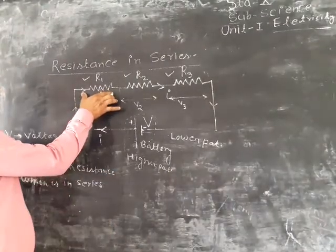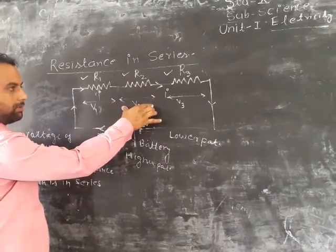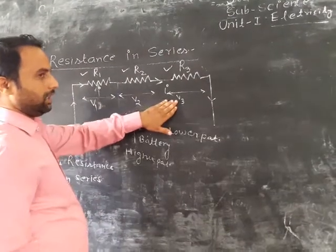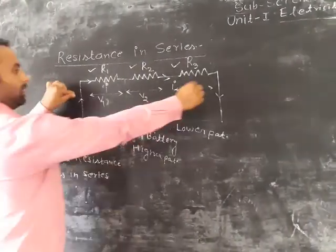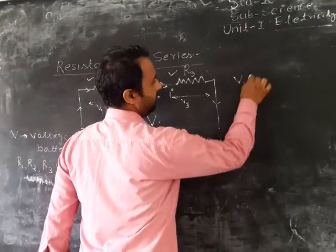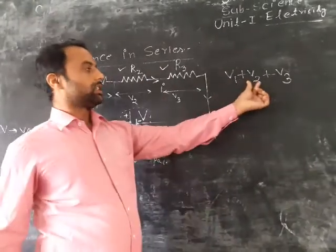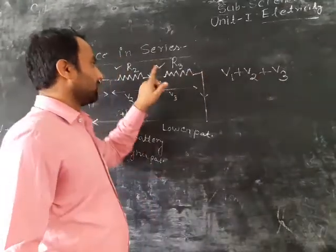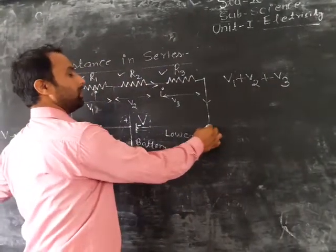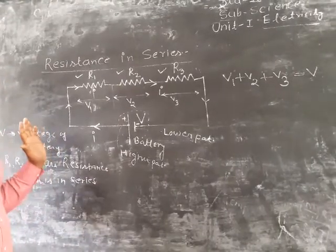Across resistance R1 the potential V1 is developed, across R2 the potential V2 is developed, and across R3 the potential V3 is developed. If we add V1, V2, and V3, this total value becomes V, because the connecting wire potential equals the battery potential. Hence, we can say that total potential V equals V1 plus V2 plus V3. Potential values add up in series.